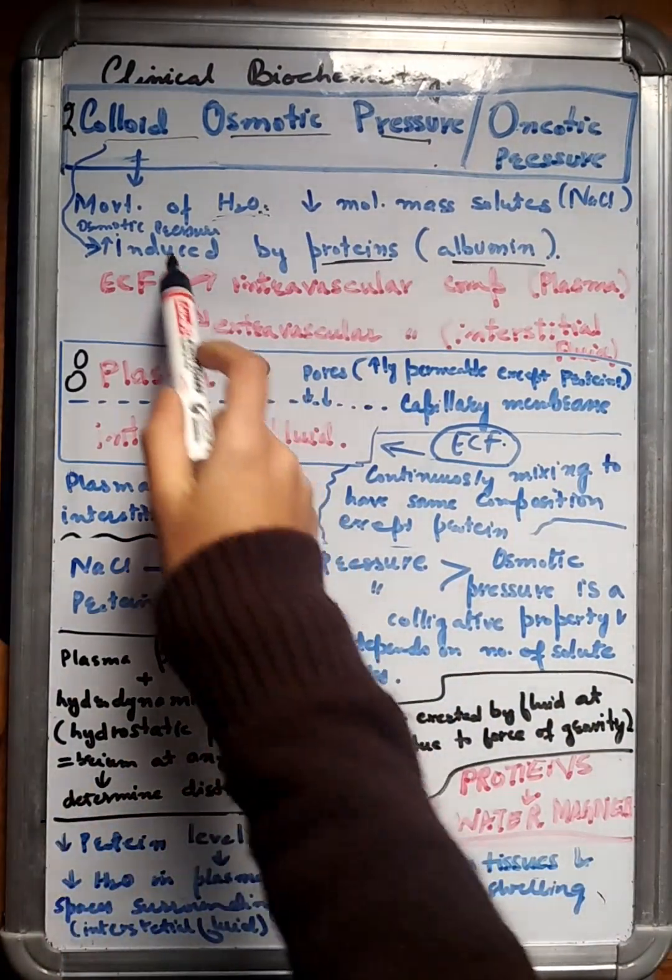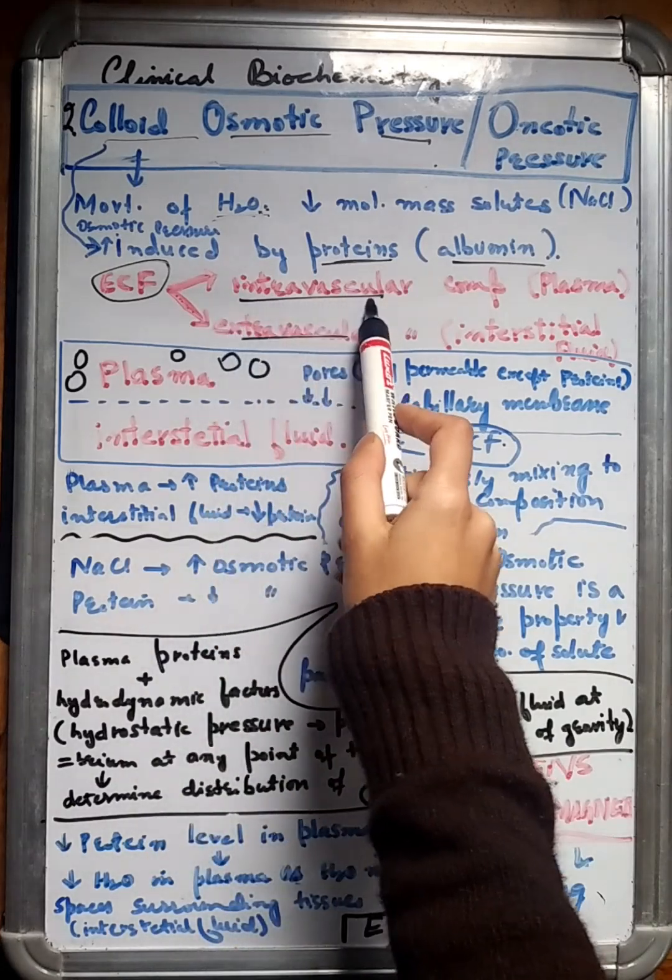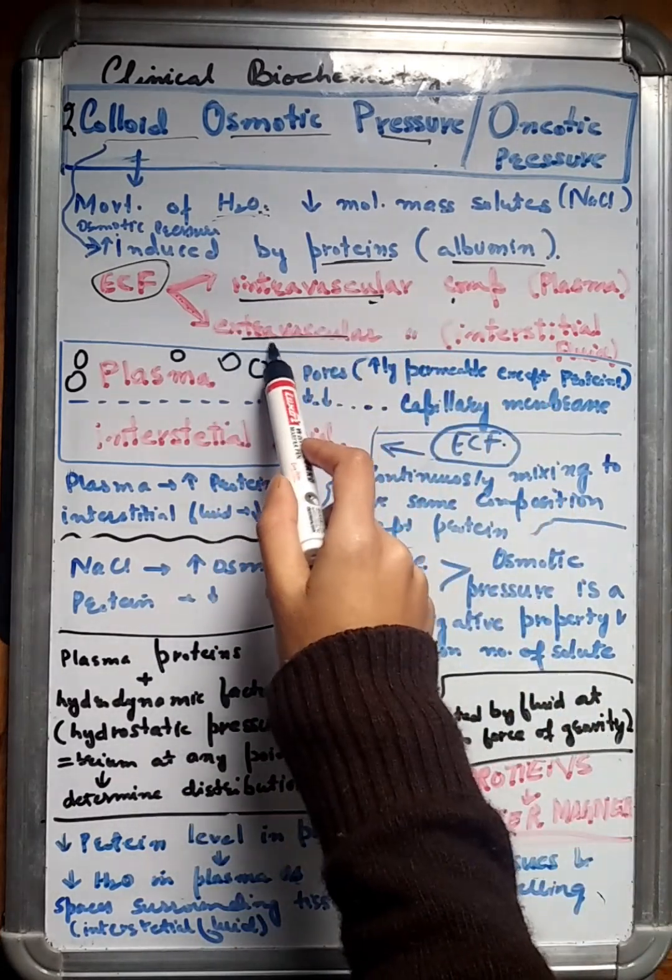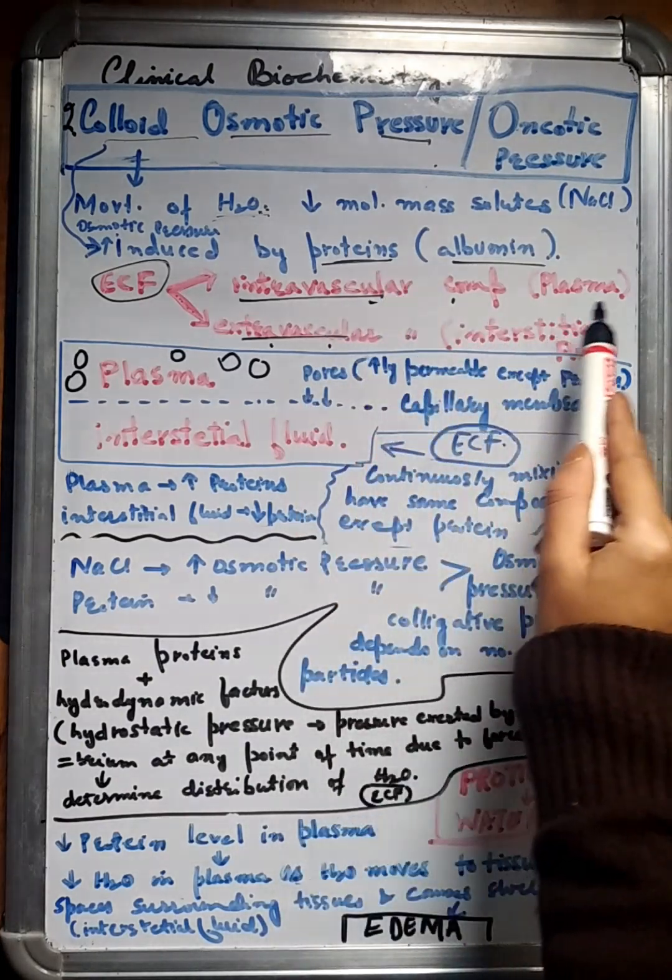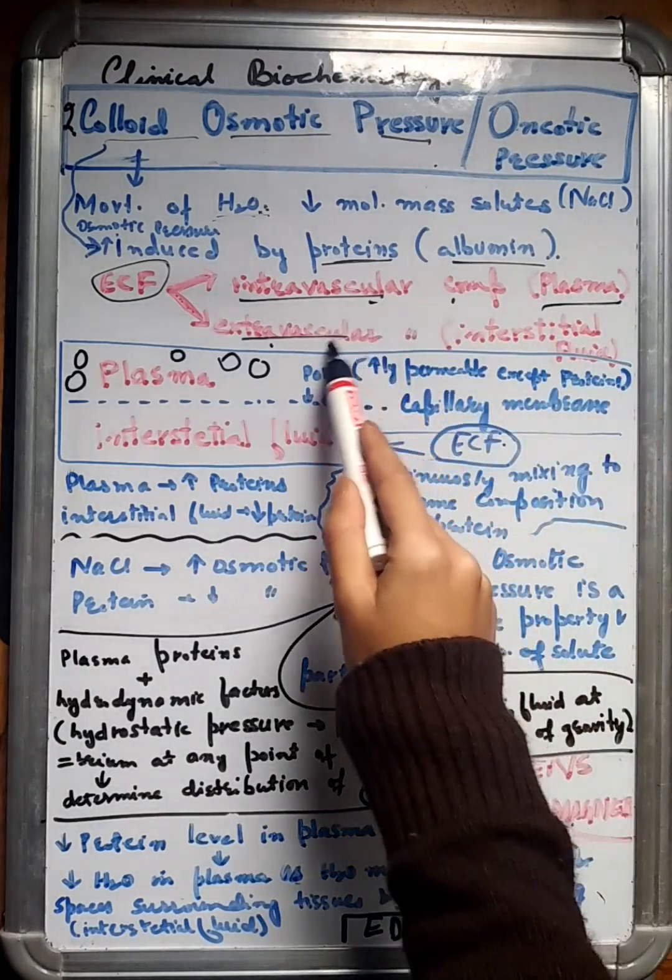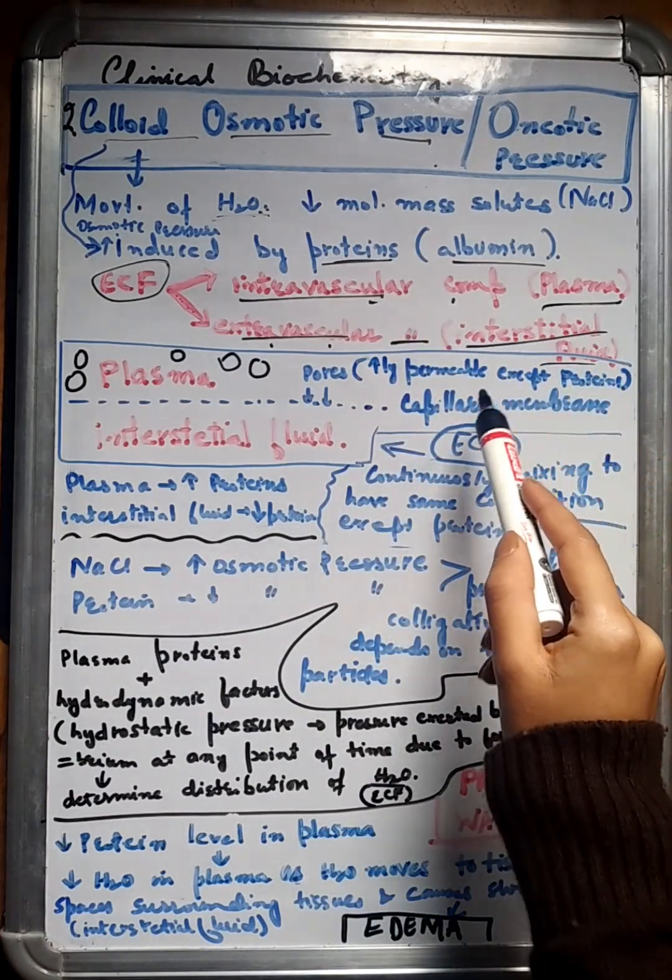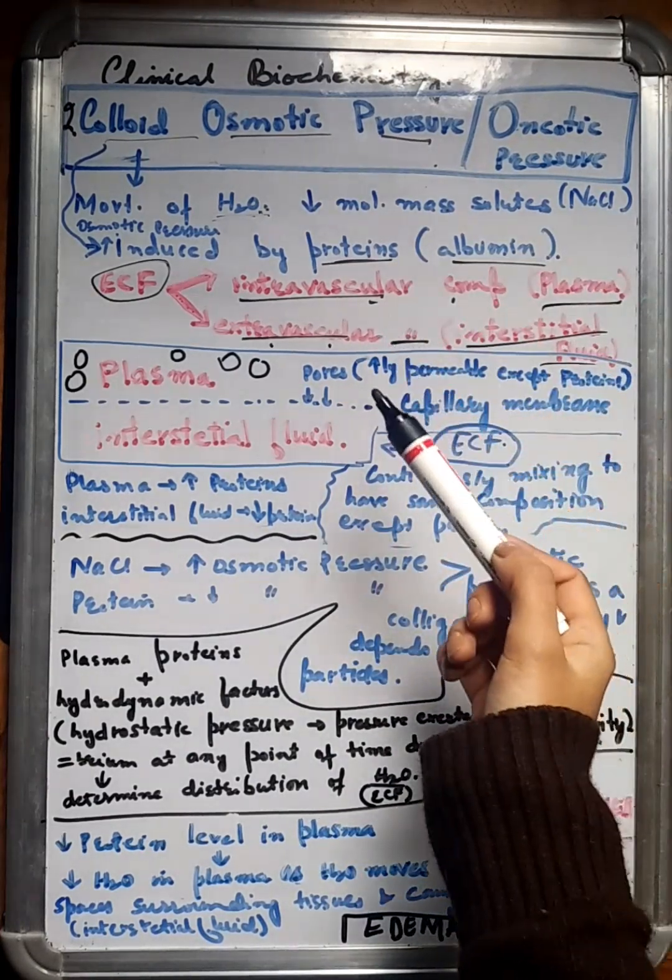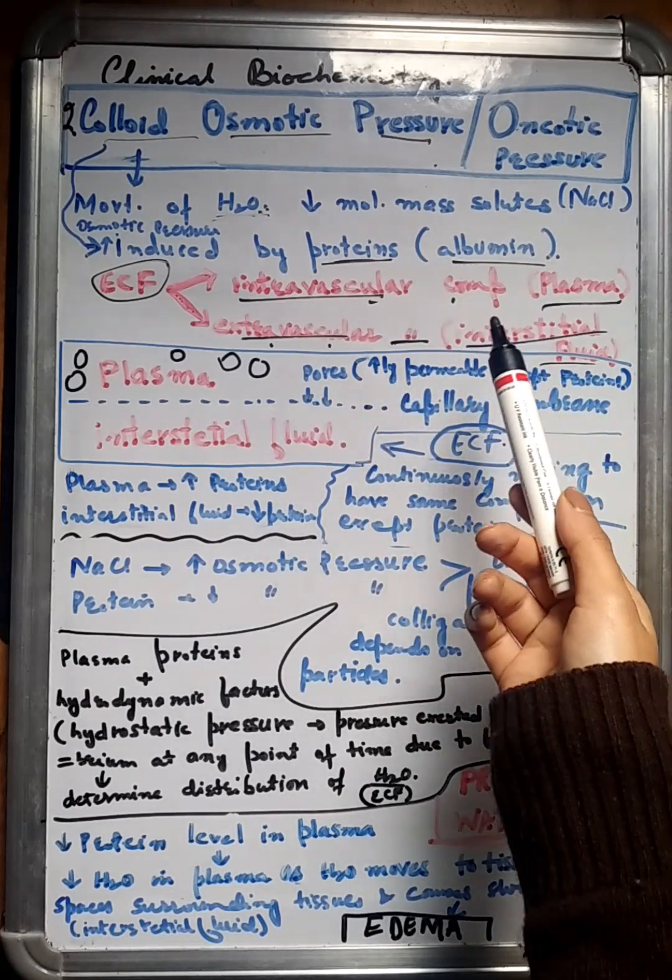As we already know, ECF has two more divisions. One is the intravascular compartment, the other is the extravascular compartment. Intravascular compartment is also known as the plasma, whereas the extravascular compartment is also known as the interstitial fluid. We have already taught this in the previous lectures.